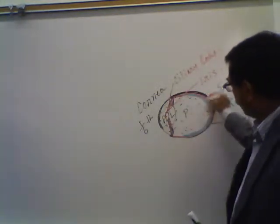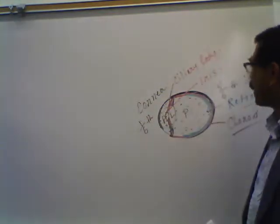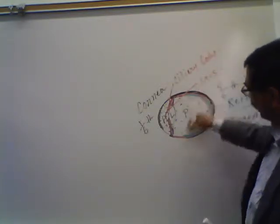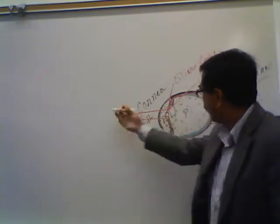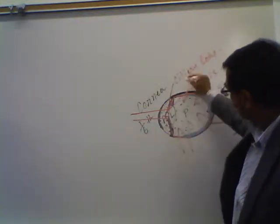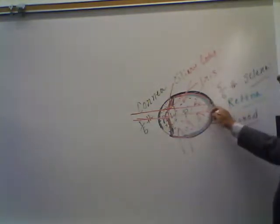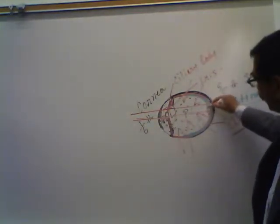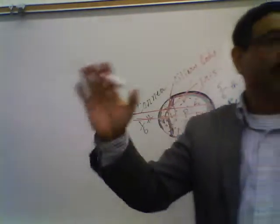The outermost layer of the wall of the eyeball is the fibrous layer, with two parts: the white sclera and the transparent cornea. The cornea allows light to get in; the sclera stops the light — it is opaque and will not let light enter. Light should only enter through the cornea from the front, so that it falls on the center of the retina, not scattered in all directions.